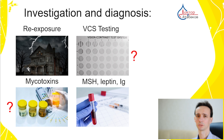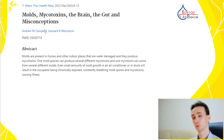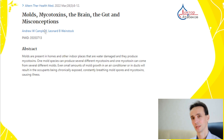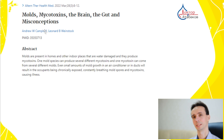Dr. Andrew Campbell is a doctor who has worked with and researched mold for many years. According to him, the best way to check for mold exposure is to test for immunoglobulins G (IgG) against mycotoxins. He explains that while IgG normally means previous exposure for viruses, bacteria, fungi, and parasites, because mycotoxins are not living organisms, IgG against mycotoxins means current exposure. Once the mycotoxin is gone, this IgG drops very fast.